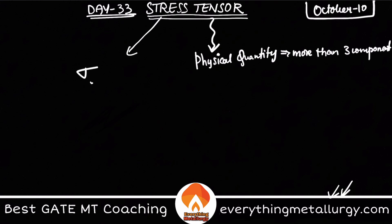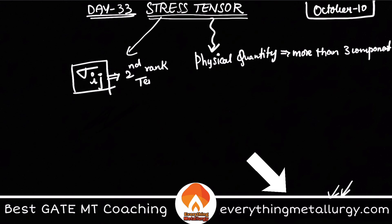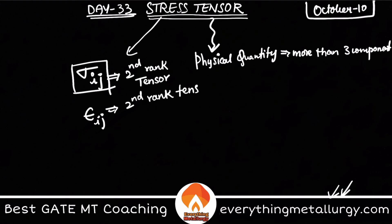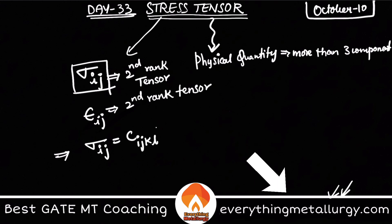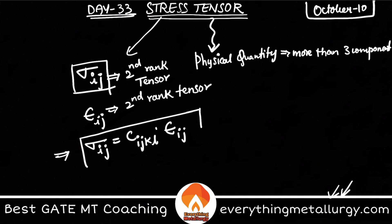Now, what is a stress tensor? Stress tensor is denoted by sigma i j. Sigma i j is a second rank tensor. Similarly, strain is also a second rank tensor. If you remember Hooke's law, you can write it in tensorial form as sigma i j equals C i j k l times epsilon i j.